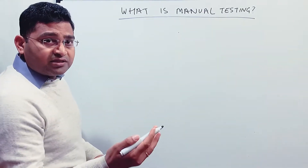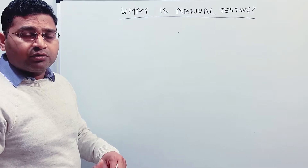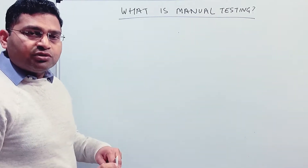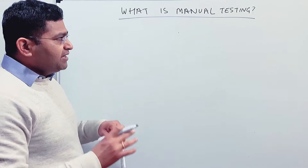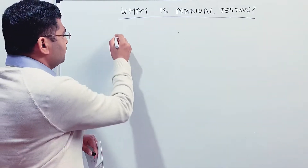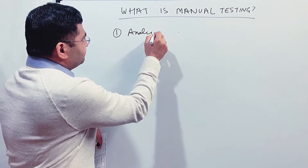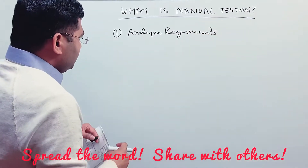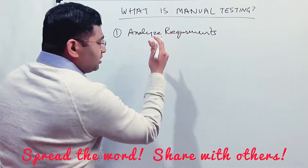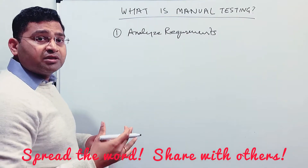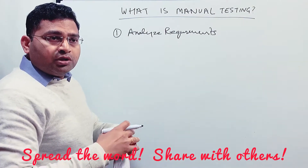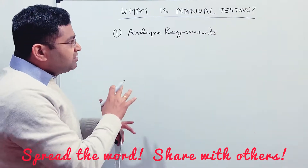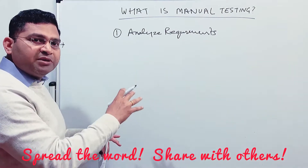The first phase in manual testing is to analyze the requirement. Whatever requirement a customer provides, you, as a tester, analyze those requirements and try to find out any gaps if there are any. You read through the requirement, understand it, and then try to understand what all scenarios might be possible or you might be trying to test to ensure that the requirement is being covered.